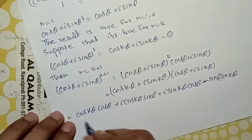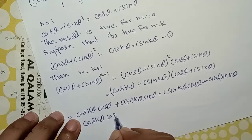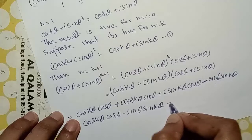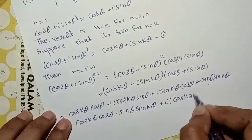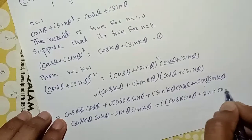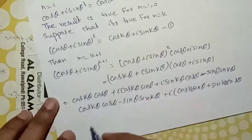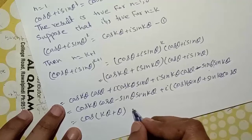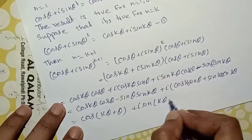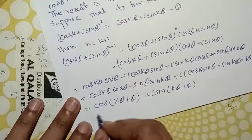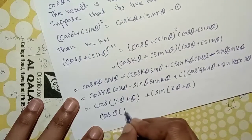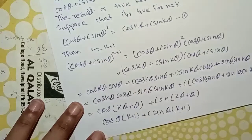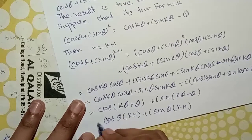Expanding, the real part gives cos(k·theta)·cos(theta) minus sin(theta)·sin(k·theta), and the imaginary part gives cos(k·theta)·sin(theta) plus sin(k·theta)·cos(theta). This simplifies to cos((k+1)·theta) plus iota sin((k+1)·theta). This is true for k plus 1.